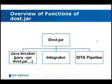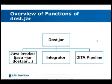The basic functions of dost.jar are three things that are pretty much unrelated to each other. First, it has the Java Invoker — the code that implements starting dost.jar from the command line with java -jar dost.jar. Second, it contains the Integrator, a tool for enabling plugins to the toolkit. And third, it has the various pieces of the DITA pipeline that happen to be implemented in Java — those processing steps that take place in Java rather than in XSLT stylesheets.